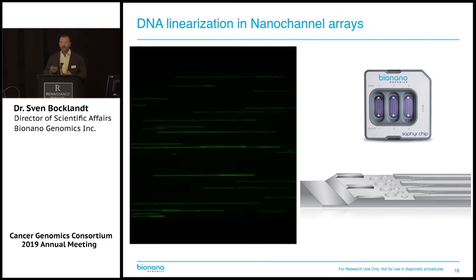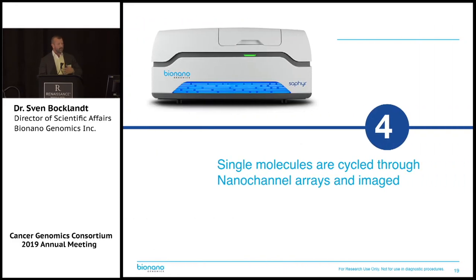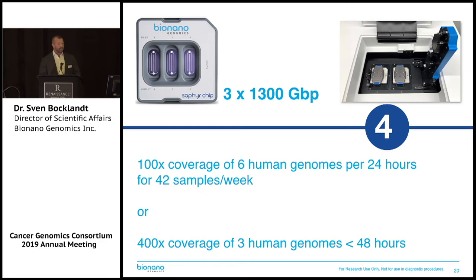We don't collect data while the molecules move — we do that when they're paused. The instrument cycles molecules in the channels, images them, and cycles new ones in over and over again. That gives us the capability to run six human genomes per 24 hours at 100x coverage for diploid genomes, or collect as much as 400x — 1,300 gigabase pairs of data — on each of the three flow cells on a chip in less than 48 hours. We'll be increasing this throughput later this year with a software update.